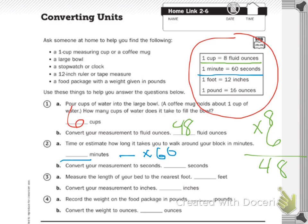It says measure the length of your bed to the nearest foot. My bed was about eight feet. Convert your measurement to inches. One foot equals 12 inches — I wrote it in purple. So I need to take my eight feet and multiply it by 12. I like to align my numbers up, putting the bigger number on top, using the U.S. traditional method.